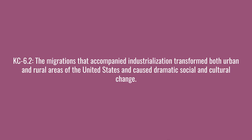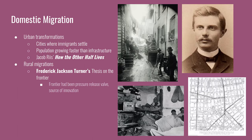The next key concept says the migration that accompanied industrialization transformed both urban and rural areas of the United States and caused dramatic social and cultural change. This period sees a dramatic rise in the size of cities, where immigrants were settling and where people from rural areas came to find wage labor. The population grew faster than the infrastructure could handle, creating crowded and unsanitary conditions. Tenements were the typical housing accommodation, designed to maximize units at the expense of bathrooms or ventilation, with city dwellers packing six to ten people into one small room.